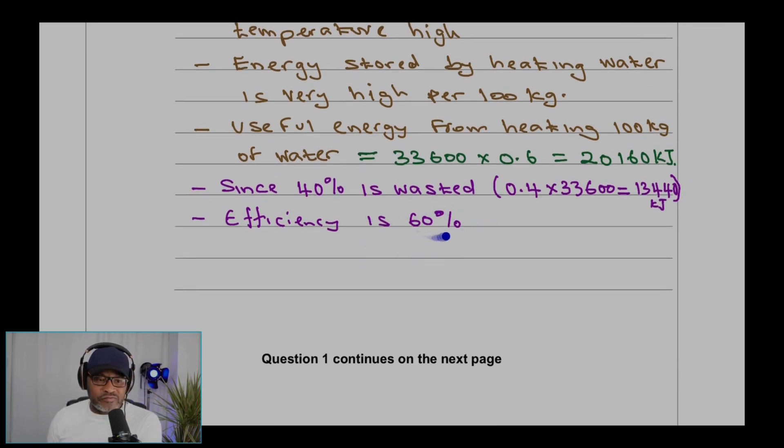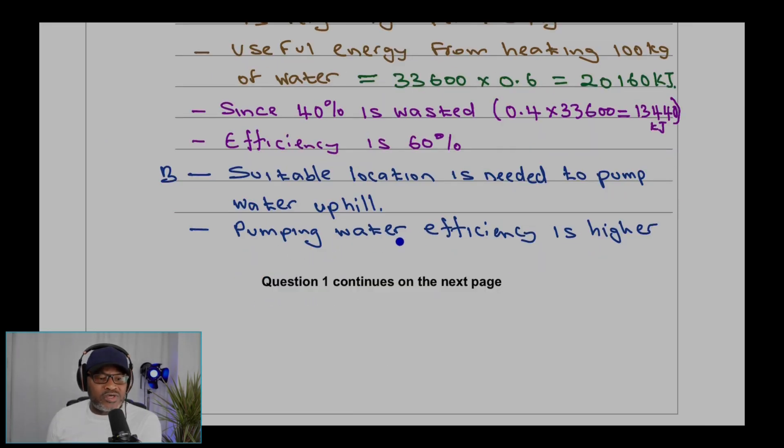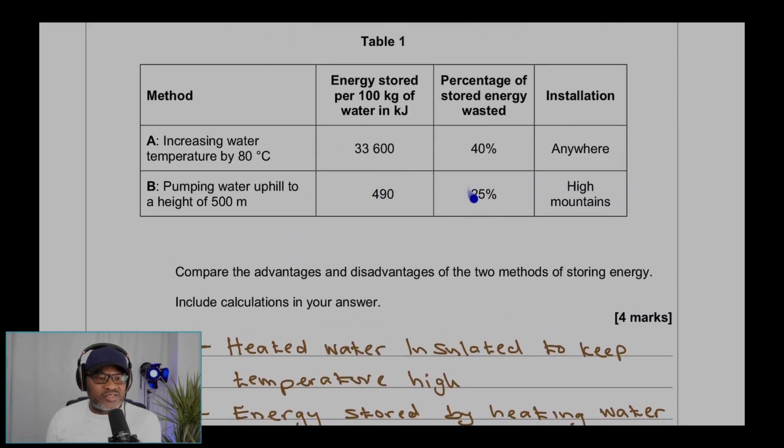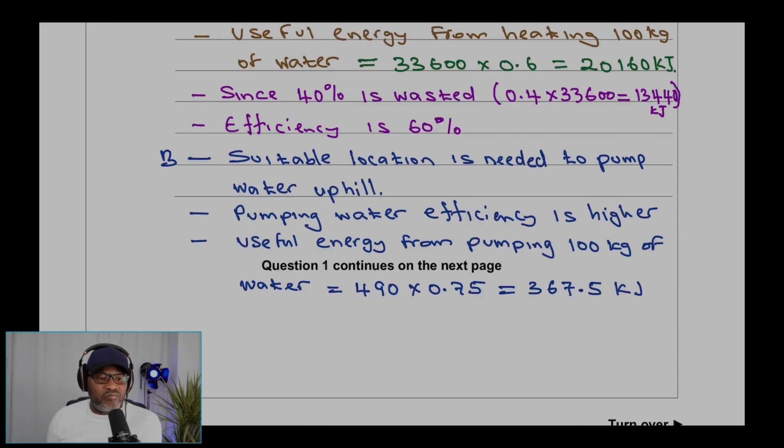For B, suitable location is needed to pump water uphill, and pumping water efficiency is higher. Useful energy from pumping 100 kilograms of water will be equal to 490, that's the wasted 25%, so 75% is the efficiency which is higher than that one.